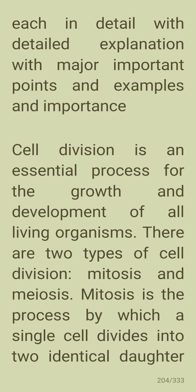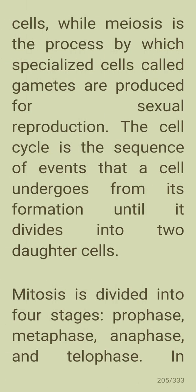Cell division is an essential process for the growth and development of all living organisms. There are two main types: mitosis, the process by which a single cell divides into two identical daughter cells, and meiosis, the process by which specialized cells called gametes are produced for sexual reproduction. The cell cycle is a sequence of events a cell undergoes from its formation until it divides.